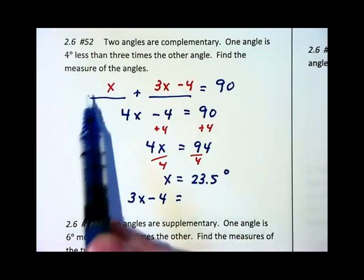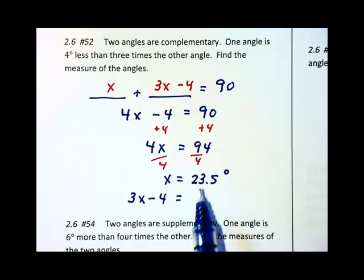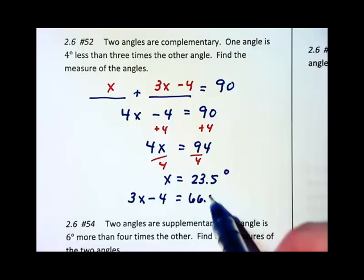Or I can say, these two things add up to 90 so subtract 90 away to get 66.5. Either way we're going to get to that same answer.